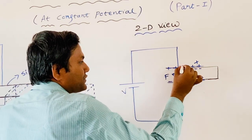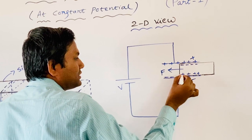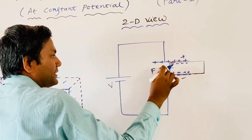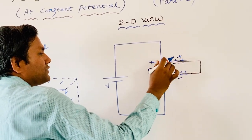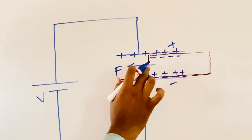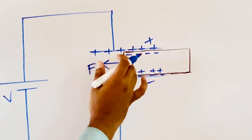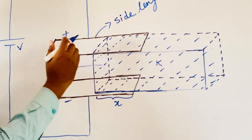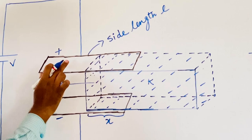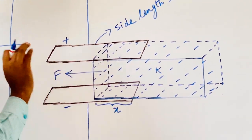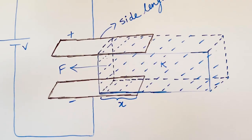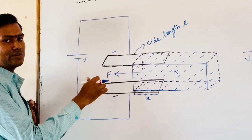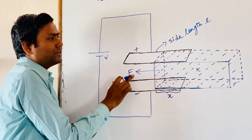Now observe carefully. This positive charge attracts this negative induced charge, and this negative charge attracts this positive induced charge. Means this positive induced charge experiences force in the leftward direction, and this negative induced charge also experiences force due to the positive free charge in the leftward direction. Finally, the resultant force acting on this dielectric slab is also in the leftward direction. So the force acting on the dielectric due to the free charges on the surface of the capacitor plates acts in the leftward direction. Now one question arises: what is the nature of this force? Is this force constant or variable, and does it depend upon certain factors?